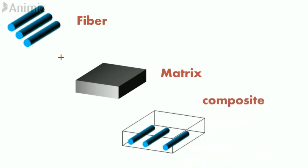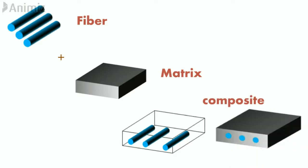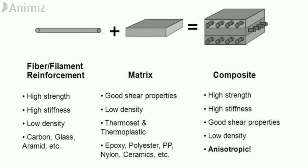Composite materials have higher strength and stiffness with low density compared to bulk materials. Here you can see the properties of the fiber material and matrix material and how they improve when we make a composite out of them.